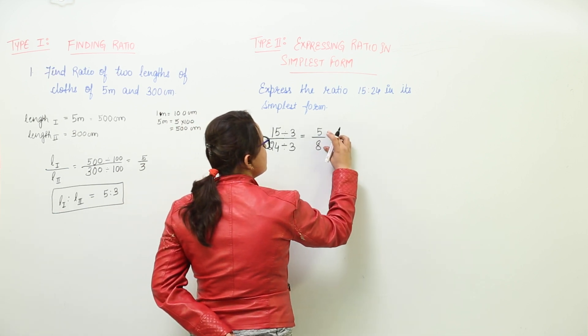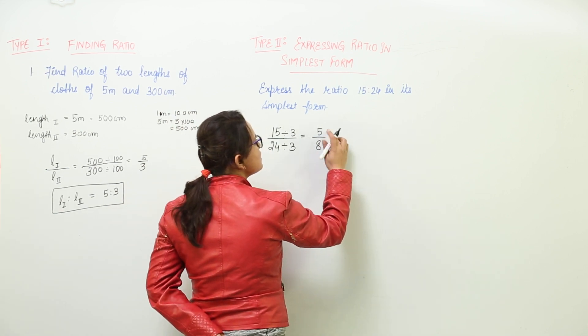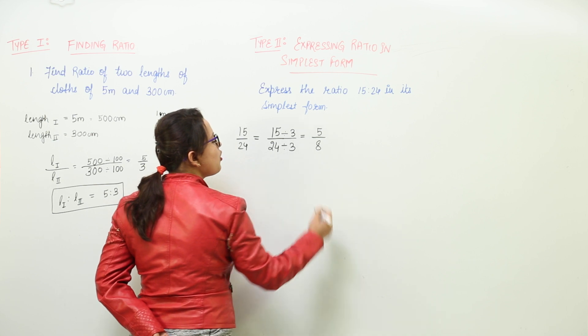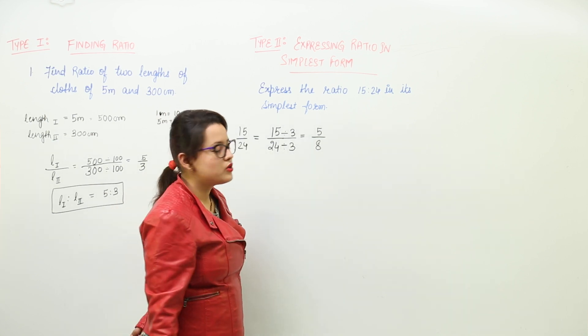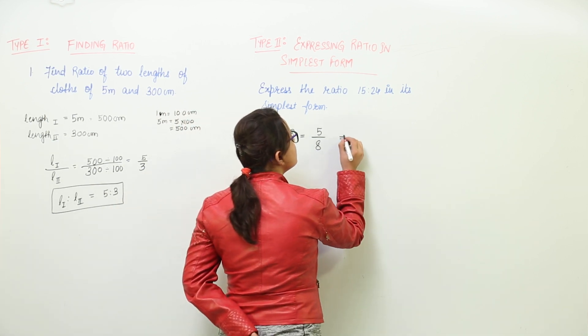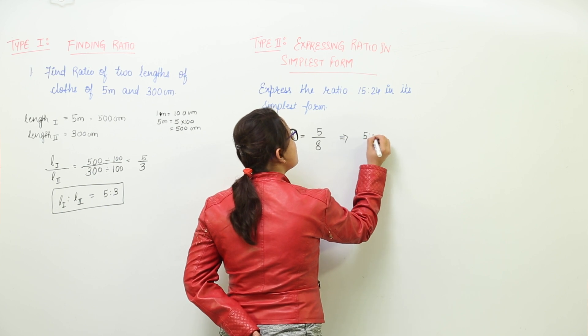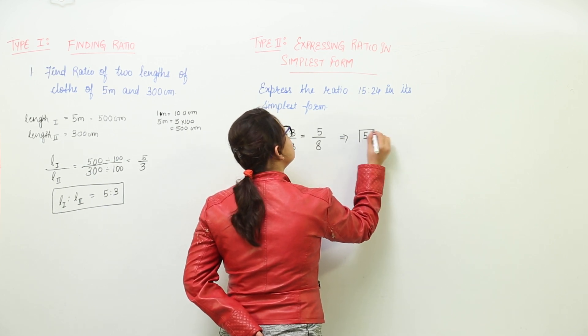And now you can check the numerator and denominator. Do they have any factor common other than 1? No. So that means the final ratio or the ratio in the simplest form is 5 is to 8.